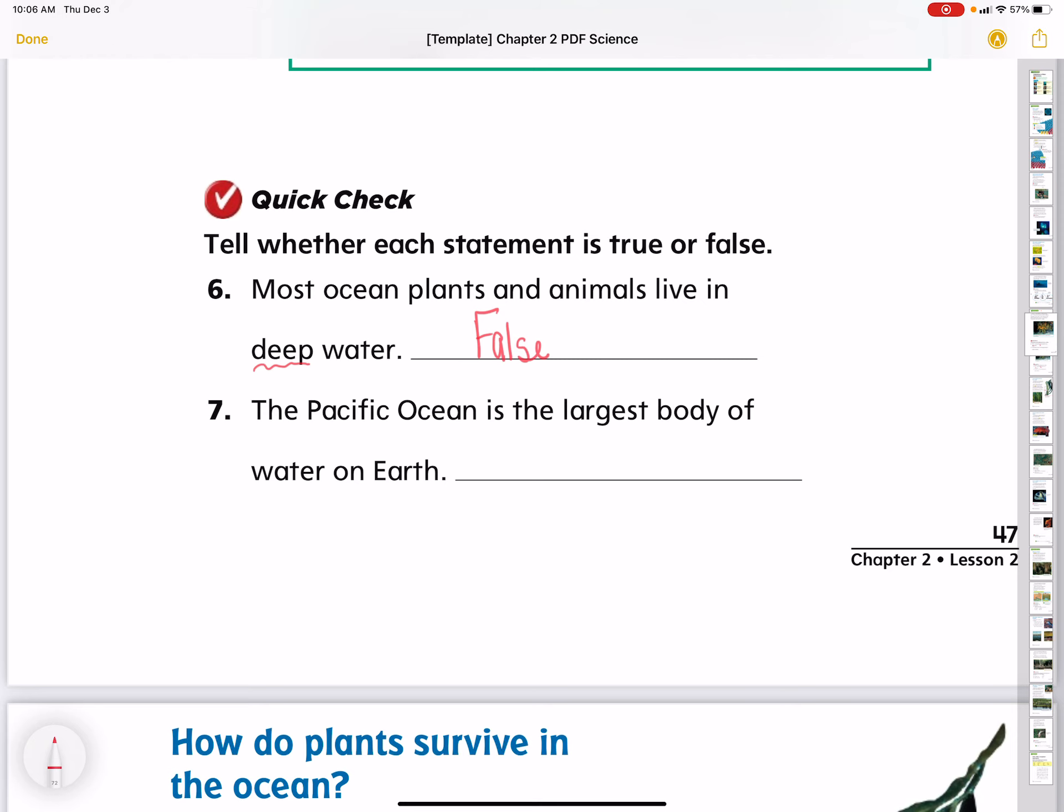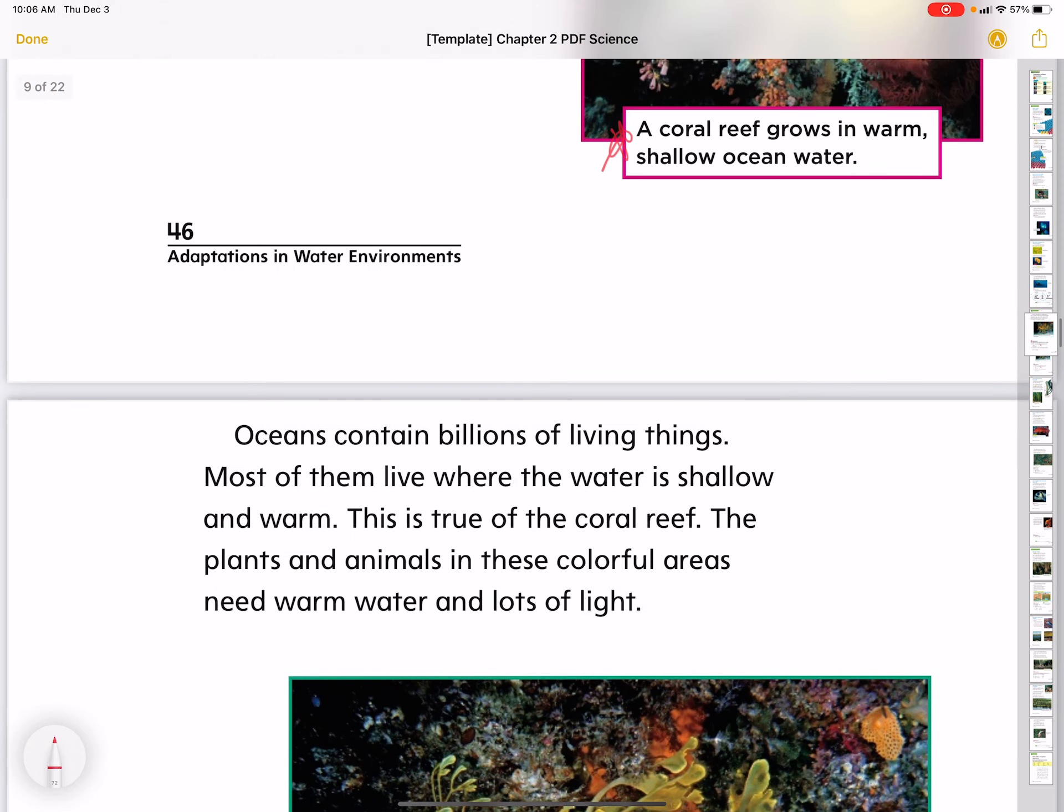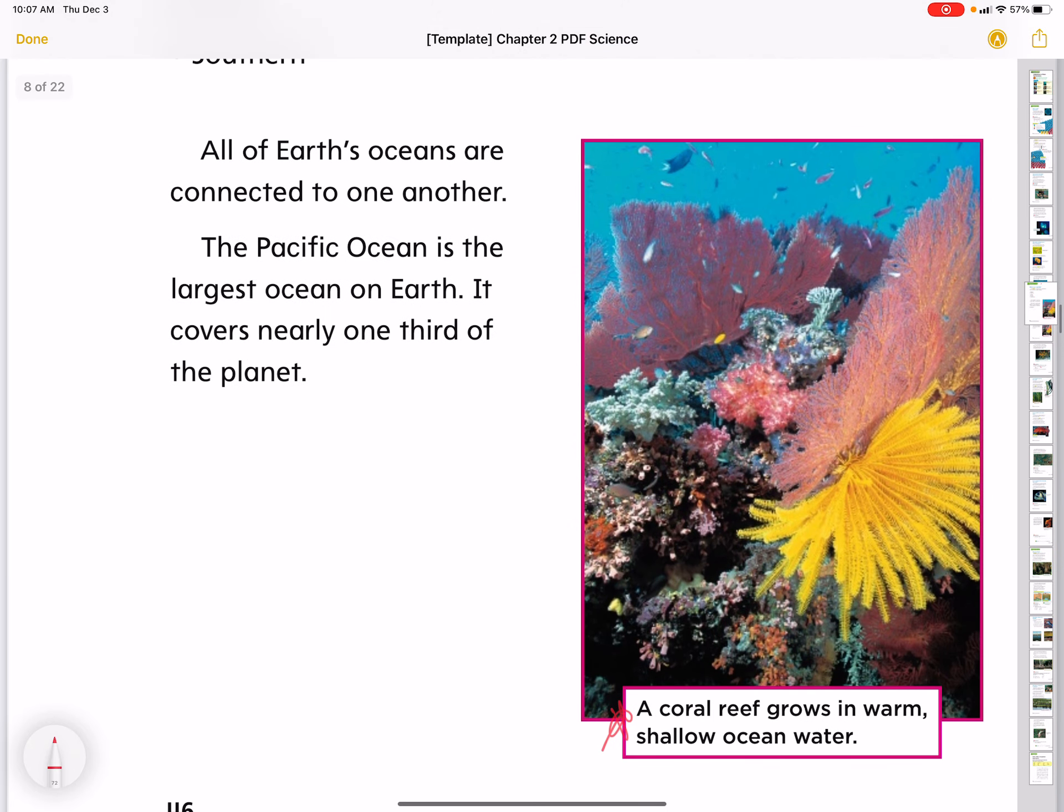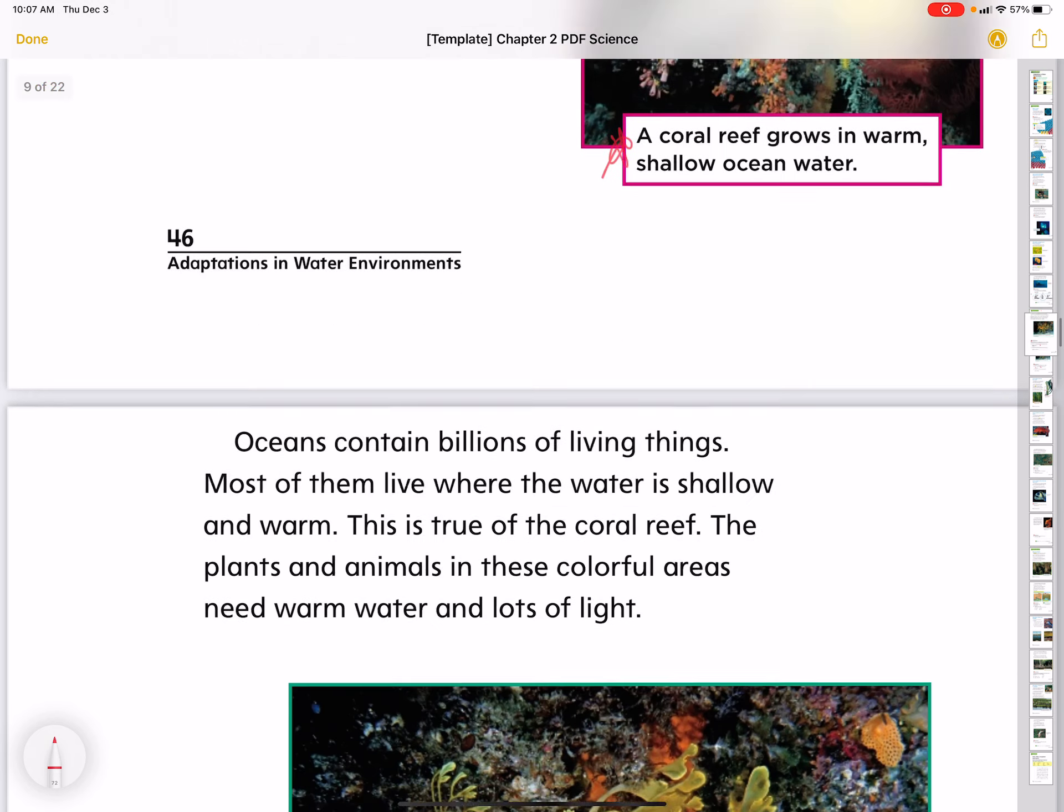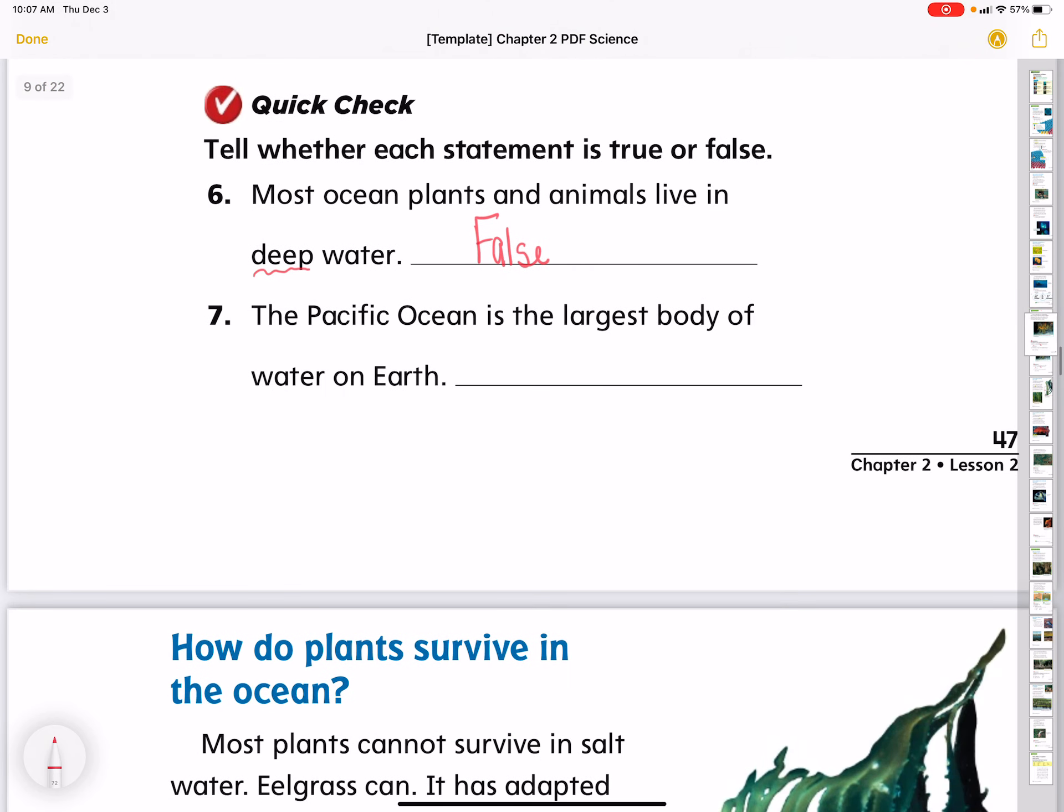The Pacific Ocean is the largest body of water on Earth. Let's go back into the text. The Pacific Ocean is the largest ocean on Earth. So that one is true.